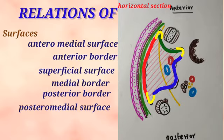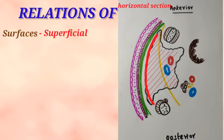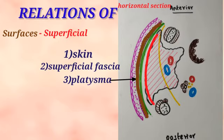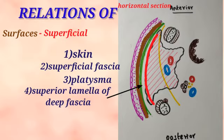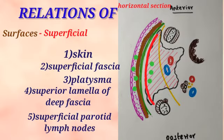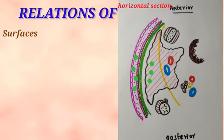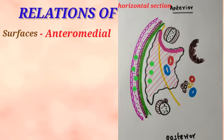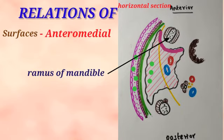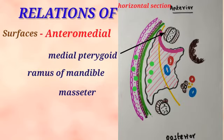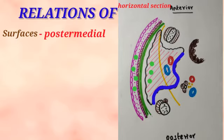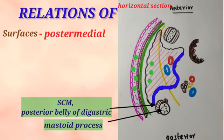The superficial surface of the parotid gland is covered from external to internal by the skin, superficial fascia with the fibers of the platysma, and the superficial lamella of the parotid sheath derived from the deep cervical fascia. The superficial fascia also contains the parotid group of lymph nodes. We can also see the greater auricular nerve which supplies the skin over the angle of the mandible. The anteromedial surface is deeply grooved and is related to the ramus of the mandible along with the posterior inferior part of the masseter on its outer surface and the insertion of the medial pterygoid muscle on its inner surface. The posteromedial surface is very extensive and is related to the mastoid process along with the sternocleidomastoid muscle and the posterior belly of the digastric, and the styloid process along with the styloid group of muscles.